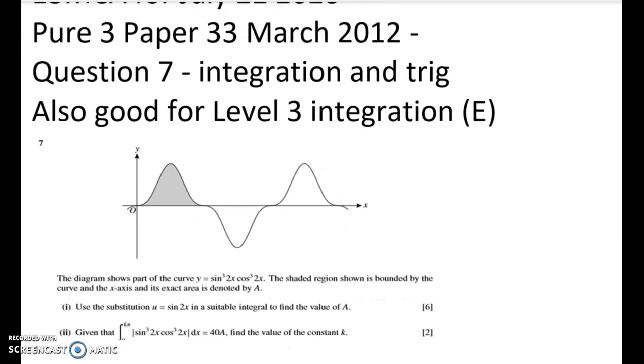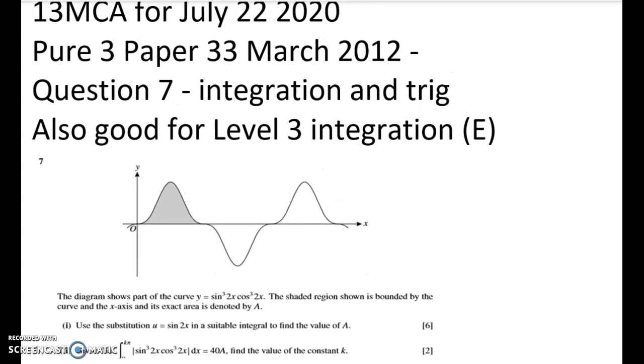So what we have to do is look at this curve. And the curve is y equals sine cubed 2x, cos cubed 2x. And the shaded region shown is bounded by the curve and the x-axis. And its exact area is denoted by A.